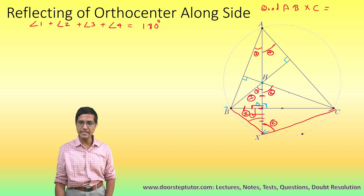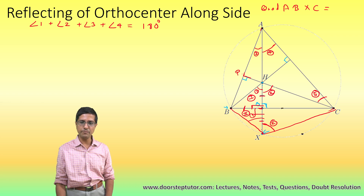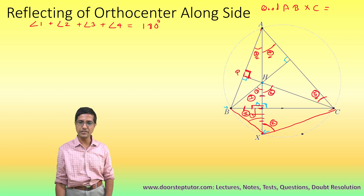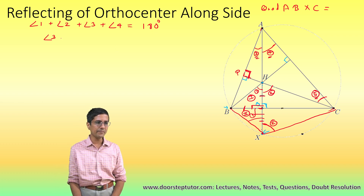The second thing we do is look at triangle ACP and name this angle as angle 5. In triangle ACP, this angle is 90 degrees, so the sum of the other three angles must also total 90 degrees. Therefore, angle 3 plus angle 4 plus angle 5 equals 90 degrees.